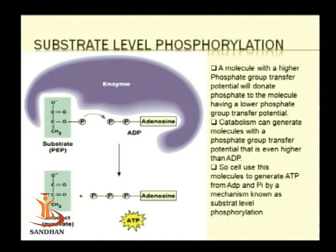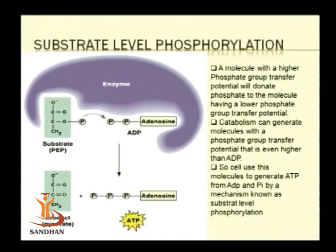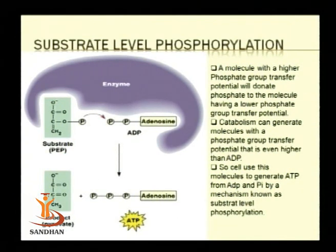Both phosphoenol pyruvate and 1,3-bisphosphoglyceric acid are high-energy intermediates — they have a phosphoanhydride bond. During the reaction between phosphoenol pyruvate and ADP, the phosphoanhydride bond of phosphoenol pyruvate is broken and that phosphate is added to ADP, forming a new phosphoanhydride bond and leading to formation of ATP.